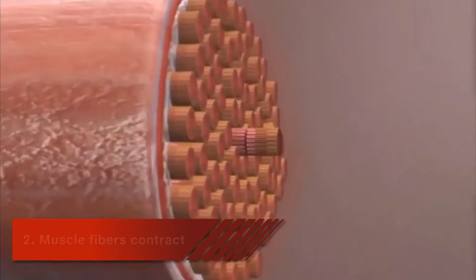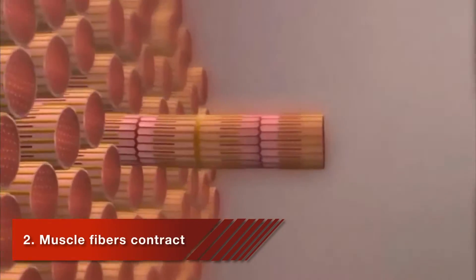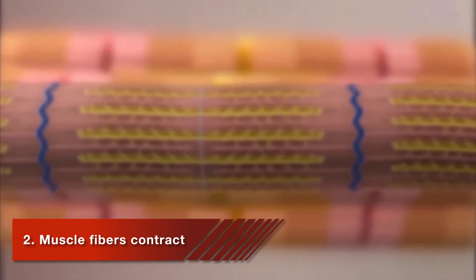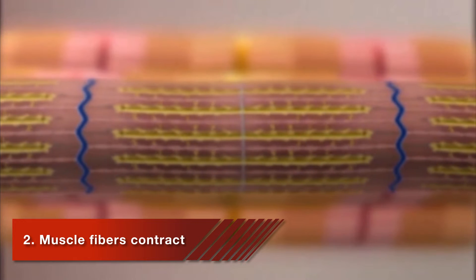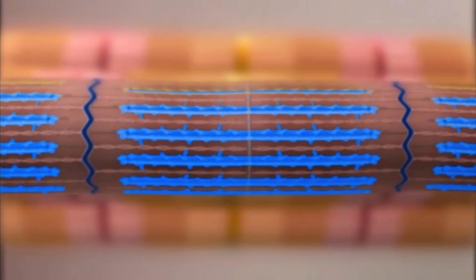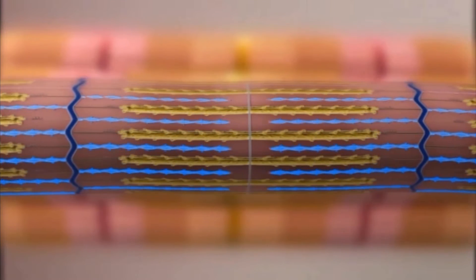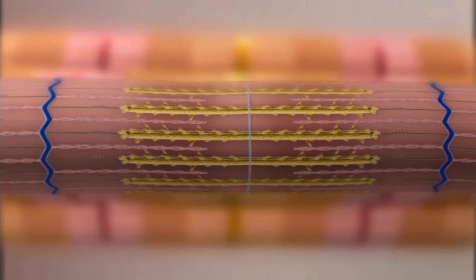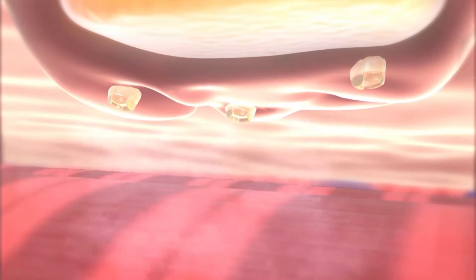The proteins inside muscle fibers are organized into long chains that can interact with each other, reorganizing to shorten and relax. When acetylcholine reaches receptors on the membranes, channels open and the process that contracts relaxed muscle fibers begins.